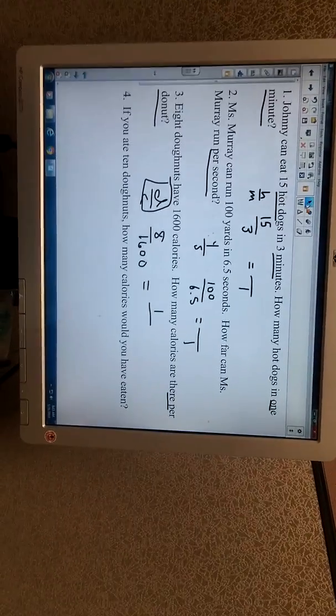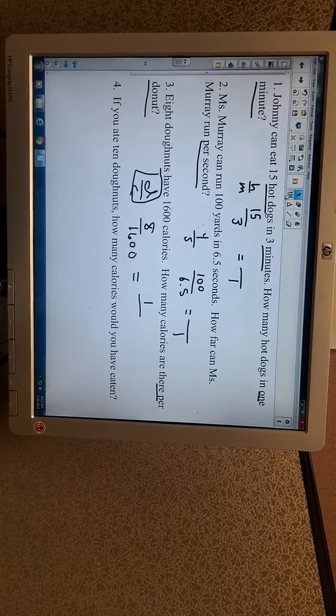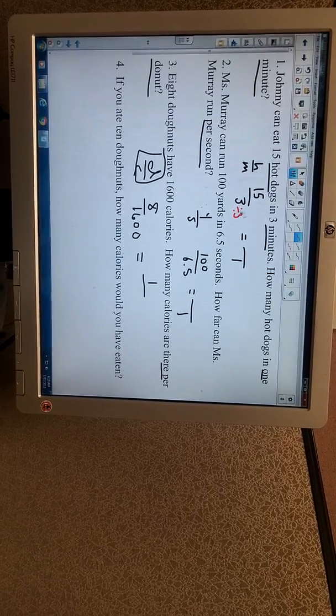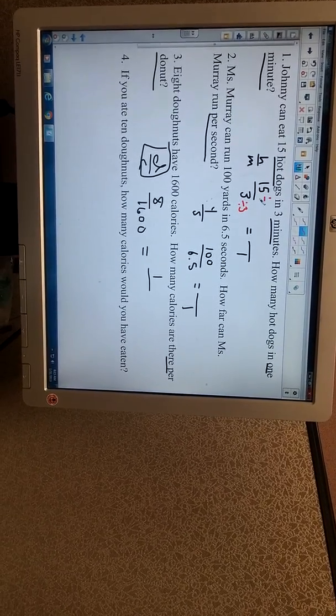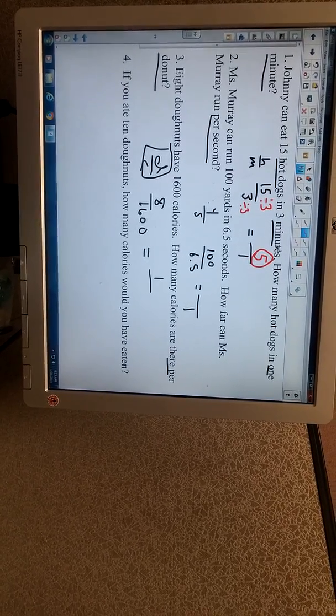Okay, so the first one, we're comparing hot dogs in minutes, 15 hot dogs in three minutes, and it wants to know how many hot dogs can you eat in one minute. 3 divided by 3 gives us our 1, 15 divided by 3 gives us 5, which means they can eat 5 hot dogs per minute.